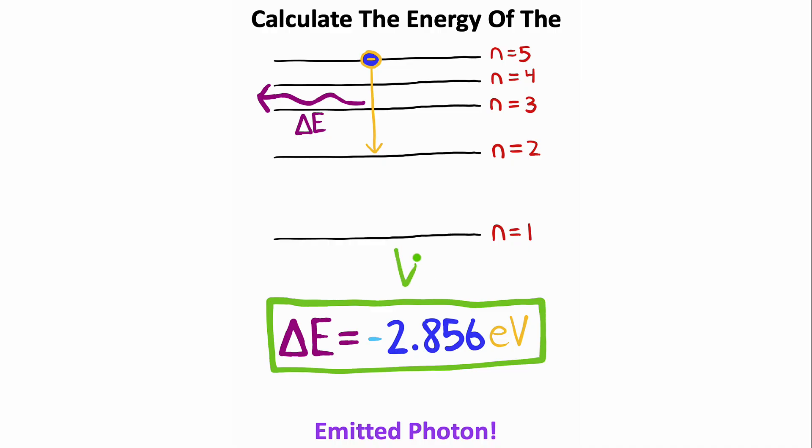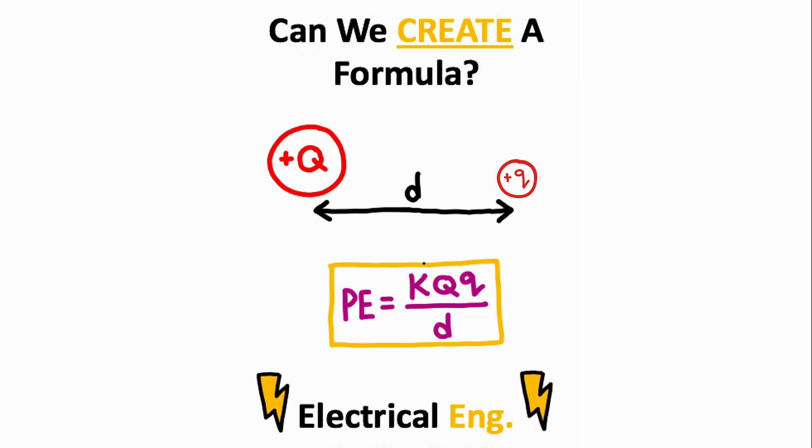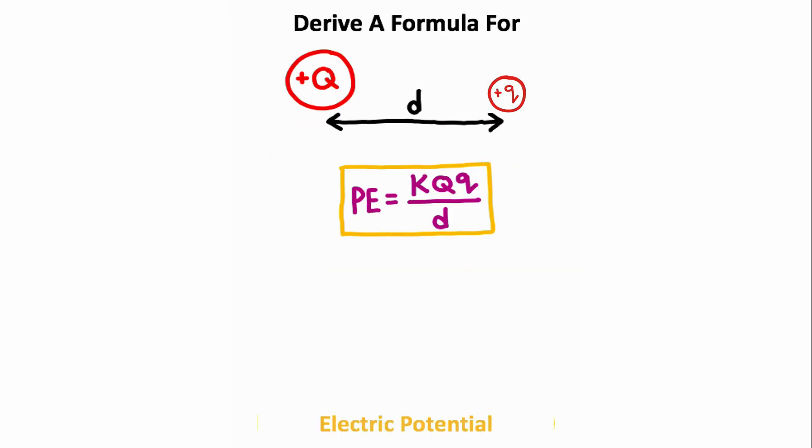I believe you are currently looking at a potential energy equation that describes the potential energy between a system of two charges. Now what we want to do is use this potential energy equation to derive a formula for the electric potential at this point where the charge little q is. Now electric potential is defined as the potential energy per unit of charge.